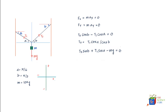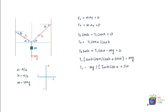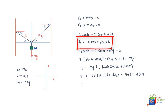Substituting the value of T2 into the y-direction equation gives T1·(sinB·cosA / cosB + sinA) = mg, so T1 = mg / (tanB·cosA + sinA). Plugging in m = 10 kg, g = 9.8, and the given angles yields T1 = 49 N. Substituting T1 back gives T2 = 85 N.